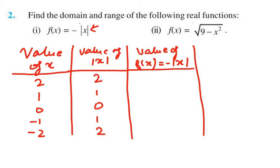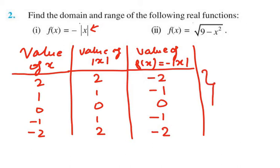Remember, in f(x) = minus mod x, the minus sign is outside. So when mod x is 2, f(x) becomes minus 2; the next gives minus 1; then 0; then minus 1 again; and the last gives minus 2.